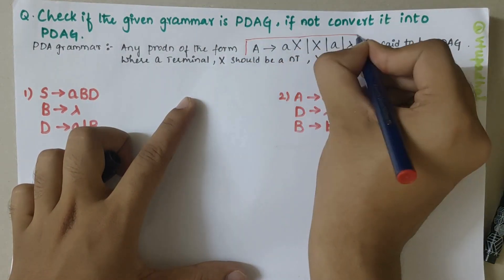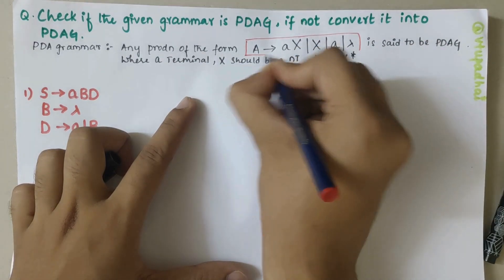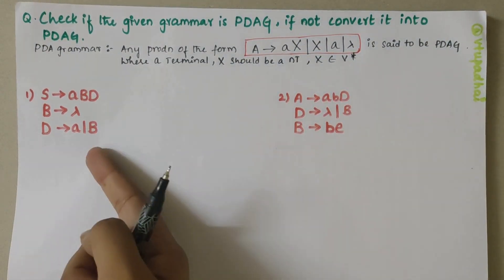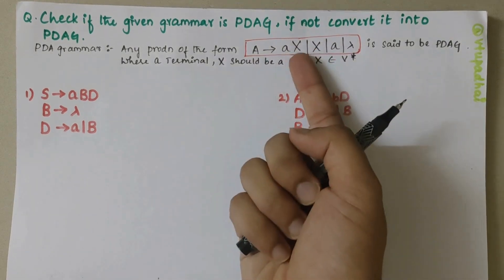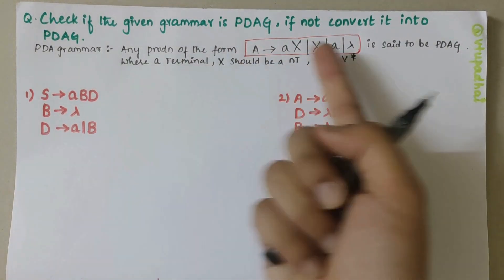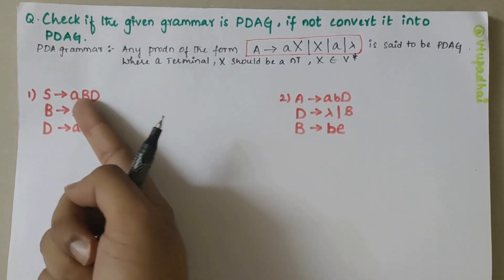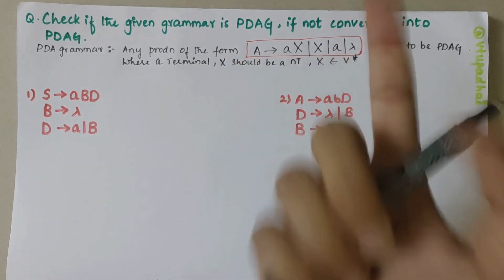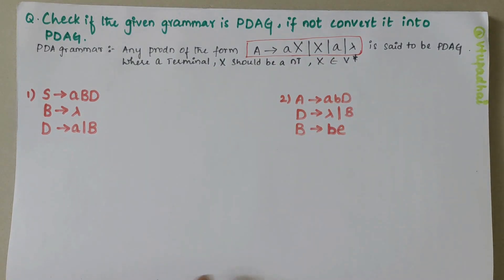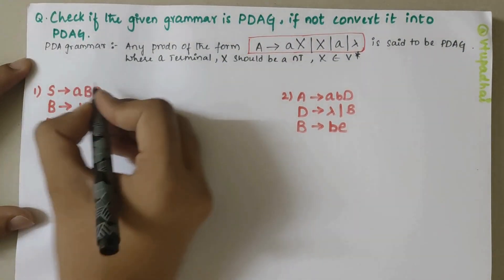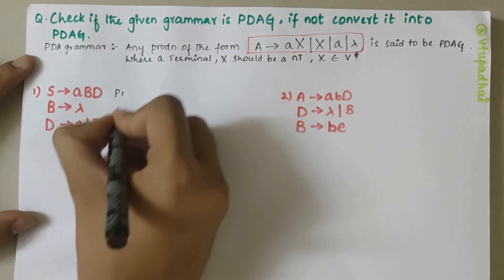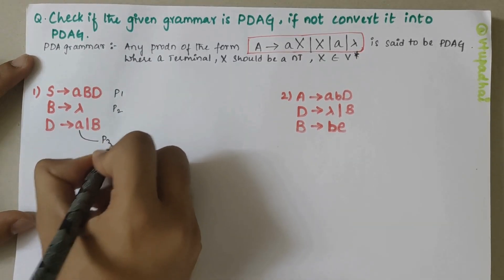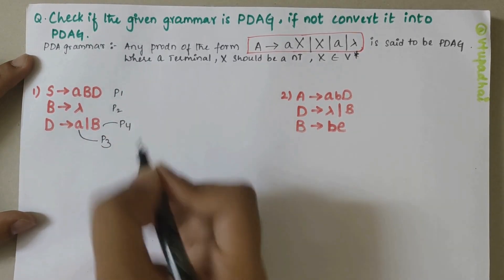Let's put this equation in a box. We'll be comparing all the productions in the given grammar to this equation, and if they match then that particular grammar is said to be PDAG. So let's start with the first production. Here I have four productions: P1, P2, P3, and P4.